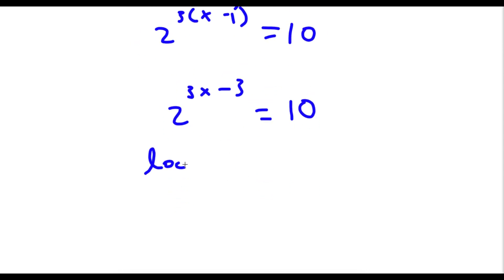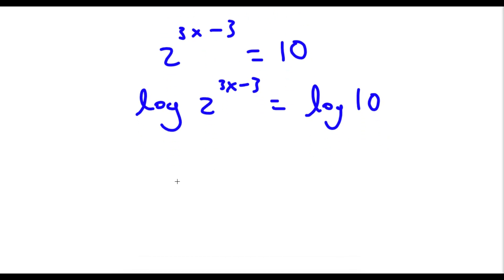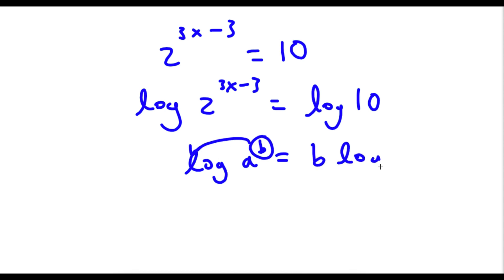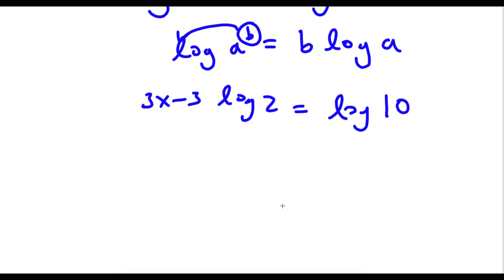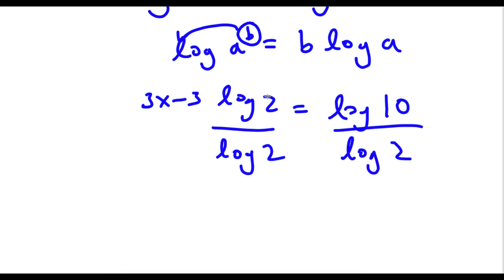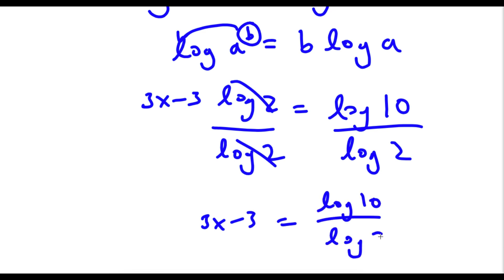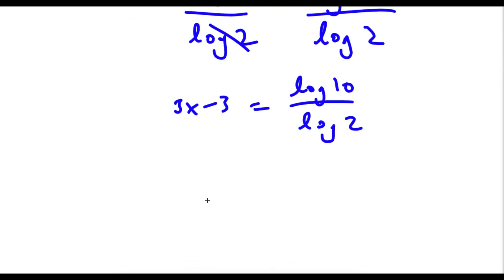Now if I take the log on both sides, I have log of 2 to the power of 3x minus 3 is equal to log 10. An important property of logarithms is that log a to the power of b equals b times log a. So I can move the exponent to the front: 3x minus 3 times log 2 equals log 10. Dividing both sides by log 2, these cancel out and I'm left with 3x minus 3 equals log 10 over log 2. Now log 10 is equal to 1, so 3x minus 3 equals 1 over log 2.